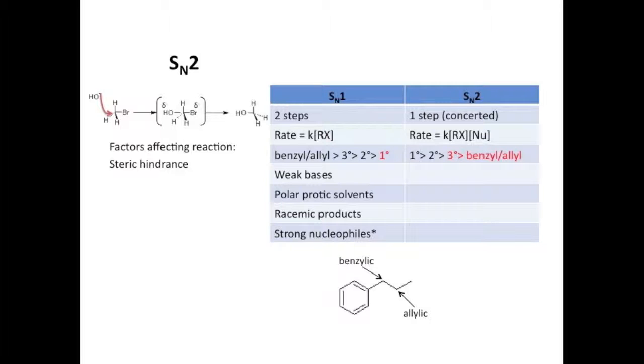What this means is that SN2 pretty much only happens at primary and secondary carbons, as tertiary, allylic, and benzylic positions just have too much stuff in the way. They're too hysterically hindered.